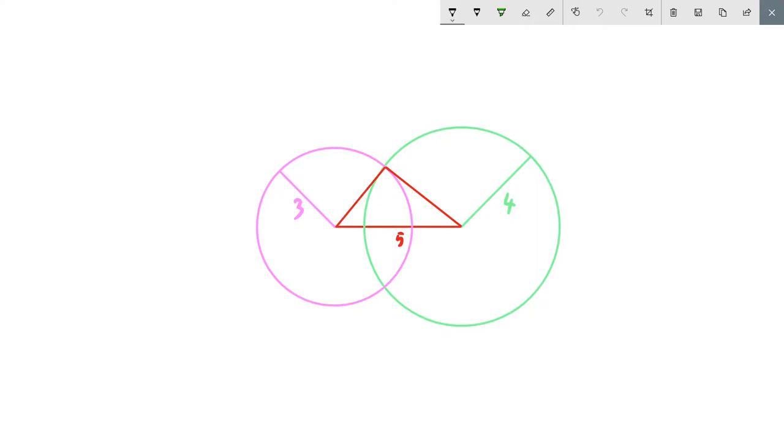Hello and today we're going to be looking at working out the area of an intersection of two circles. Right in front of us here we have two circles, a pink circle with a radius of three and a green circle with a radius of four, and their centers are five units apart.